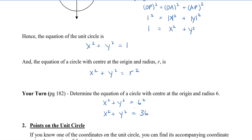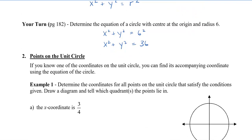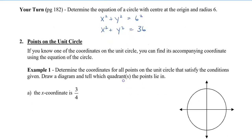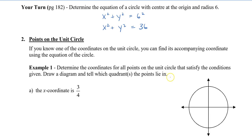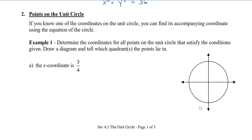Now let's take a look at some questions that don't work out quite so perfectly. If you know one of the coordinates on the unit circle, you can find its accompanying coordinate using the equation of the circle. Determine the coordinates for all the points on the unit circle given that the x-coordinate is 3/4. Draw a diagram and tell which quadrants the point lies in. So we know that this distance is going to be 3/4, and a point on the unit circle might be here — or another point could be here, because it didn't say which quadrant.